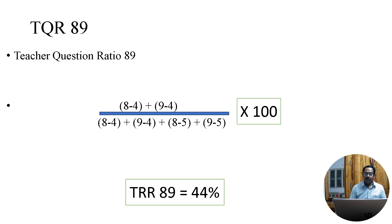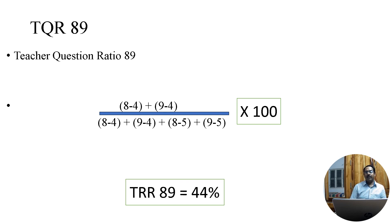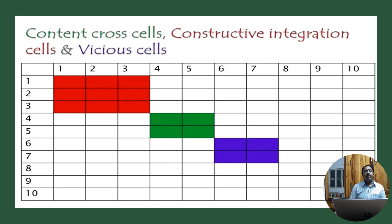TQR-89 measures how the teacher uses questioning while deriving content. It is calculated using the cells at row 8, column 4 and row 9, column 4 (tallies), divided by the sum of cells 8-4, 9-4, 8-5, and 9-5, made into a percentage. The normative value for TQR-89 is 44%.